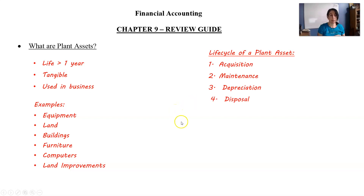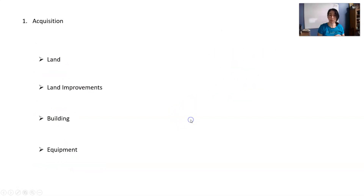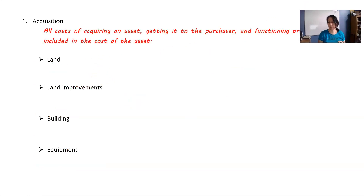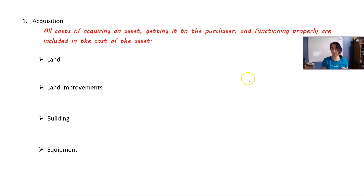And we're going to talk about how we dispose of an asset. Starting off with acquisition — what costs get included in acquisition? It's really all the costs of acquiring the asset, getting it to the purchaser, and getting it functioning properly that are included in the cost of the asset.